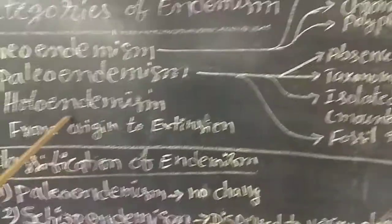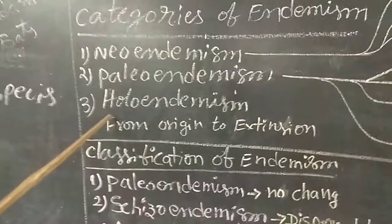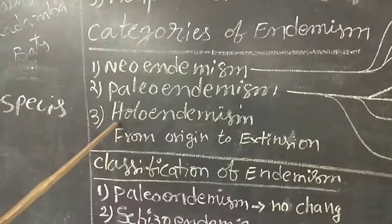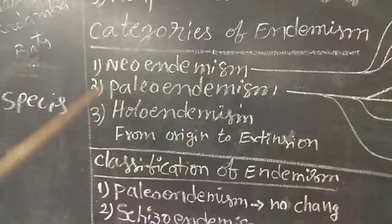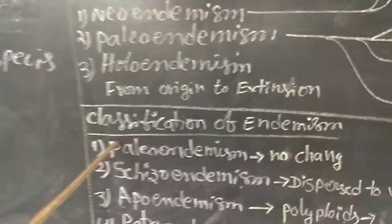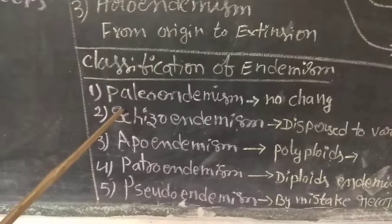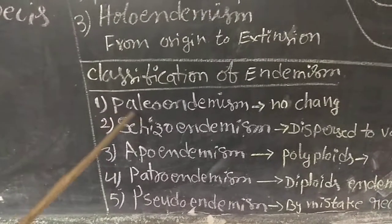Holo-endemism: holo means whole. Any plant studied from its origin to its extinction is called holo-endemism — the study from origin to extinction. These are the categories of endemism. Endemism can be classified into five categories: one is paleo-endemism — the plant species growing from millions of years till now.